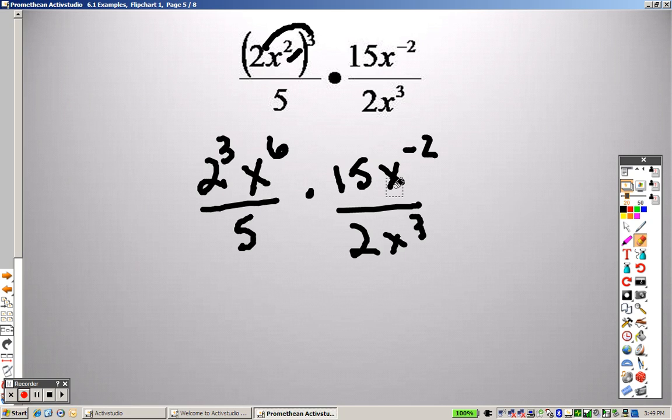And 2 cubed, we know what 2 cubed is, right? 2 times 2 times 2. So 2 times 2 times 2 is 8. So really this is what we have. So I can go straight across, right? And when I do that, 8 times 15, we end up getting 120.